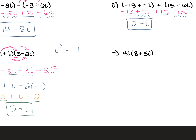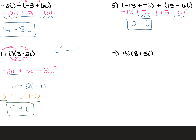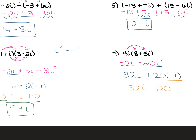For number 7, you have 4i times 8 plus 5i. We're going to distribute this 4i in. 4i times 8 is 32i. 4i times 5i is 20i squared. Again, that i squared has to be rewritten as negative 1, so that's going to give us 32i plus 20 times negative 1. We multiply that 20 by the negative 1 and that gives us 32i minus 20. This is not in a plus bi form, so we rearrange to give us negative 20 plus 32i.